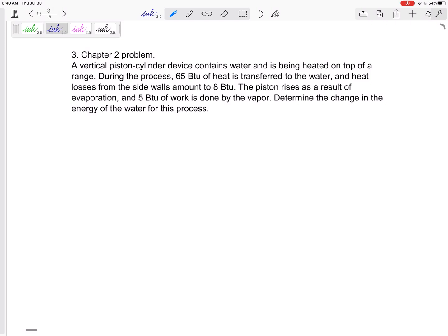We've got a vertical piston-cylinder device containing water that's being heated. During the process, 65 BTUs of heat is transferred to the water. Heat losses from the sidewalls amount to 8. The piston rises and it does 5 BTUs of work done by the vapor to determine the change in the energy of the water for this process.